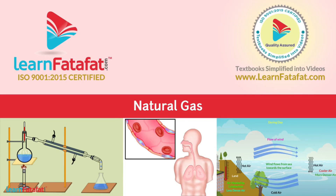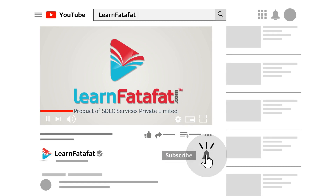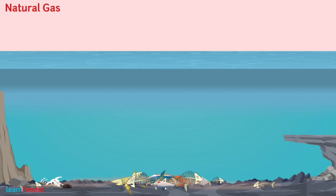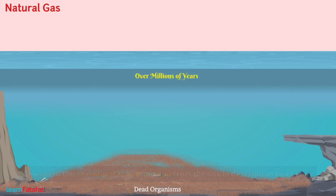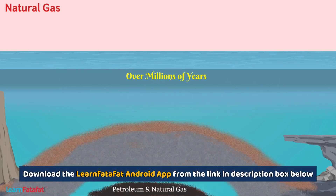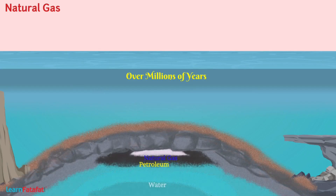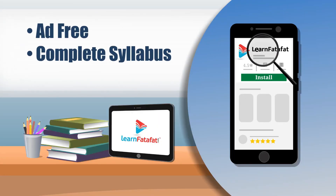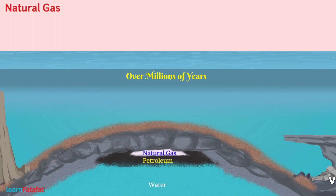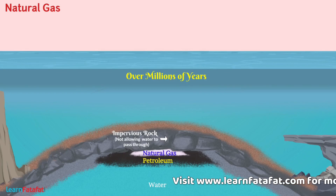Natural gas is formed during the decomposition of dead matter over millions of years into petroleum. It remains compressed above petroleum in impervious rocks called cap rock.